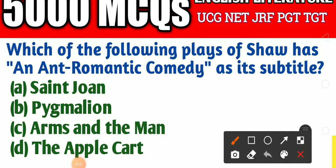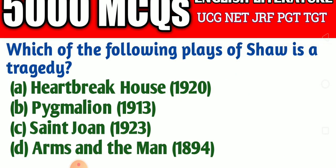Which of the following plays of Shaw has 'an anti-romantic comedy' as its subtitle? Option A: Saint Joan, Option B: Pygmalion, Option C: Arms and the Man, Option D: The Apple Cart. The right answer is Option C — Arms and the Man.